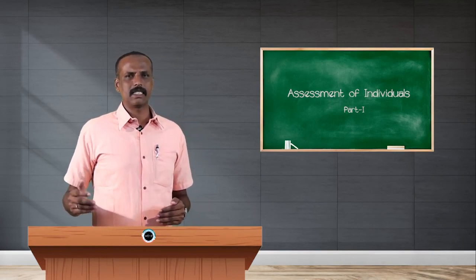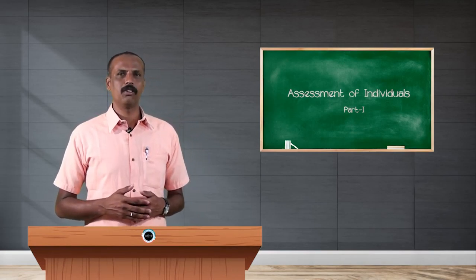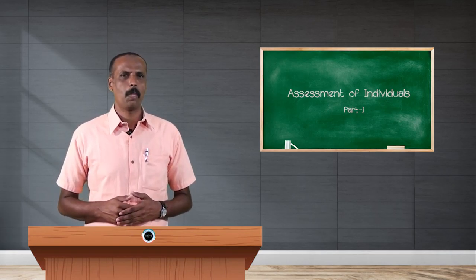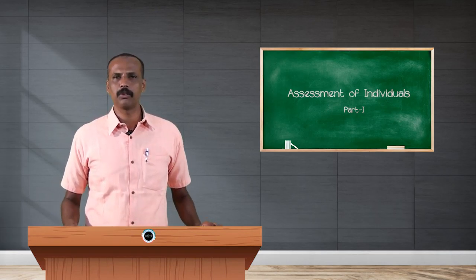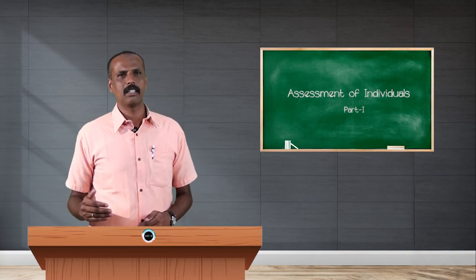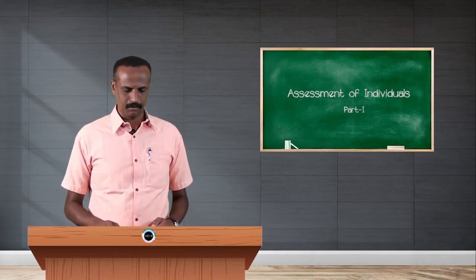Let us discuss about the steps we have to follow while assessing. The first step is to compute the income of an individual under five heads of income: income from salary, house property, business or profession, capital gains, and other sources. The aggregate of all these heads is called gross total income. In the first step, we calculate the income under each of these different heads.